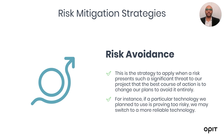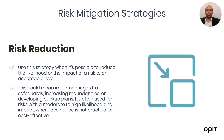Now that we have a clear understanding of our key risks and which ones to prioritize, we move on to risk mitigation strategies. We break this into four distinct strategies. First, there's risk avoidance — the strategy to apply when a risk presents such a significant threat that the best course of action is to change our plans to avoid it entirely. For instance, if a particular technology we plan to use is proving too risky, we may switch to a more reliable one. Then there's risk reduction — used when it's possible to reduce the risk or its impact to an acceptable level, such as implementing extra safeguards, increasing redundancies, or developing backup plans. It's often used for risks with moderate to high likelihood and impact where avoidance is not practical or cost-effective.